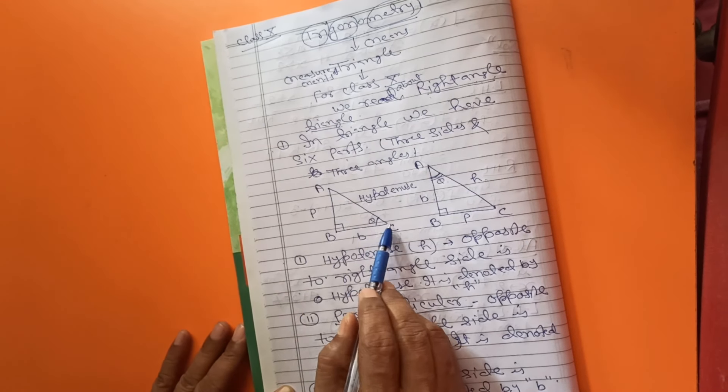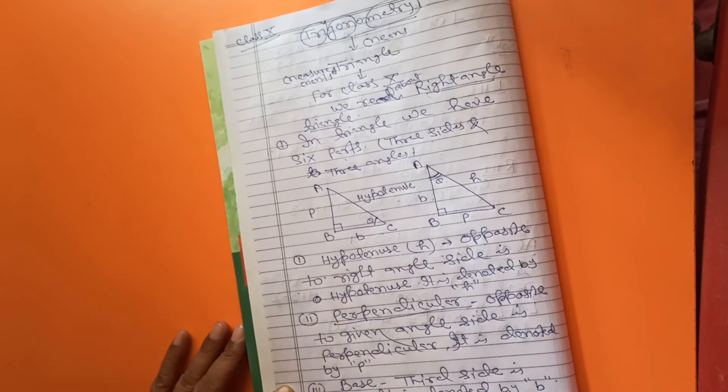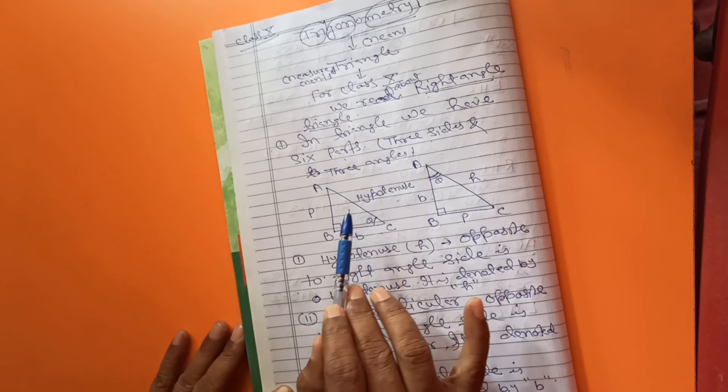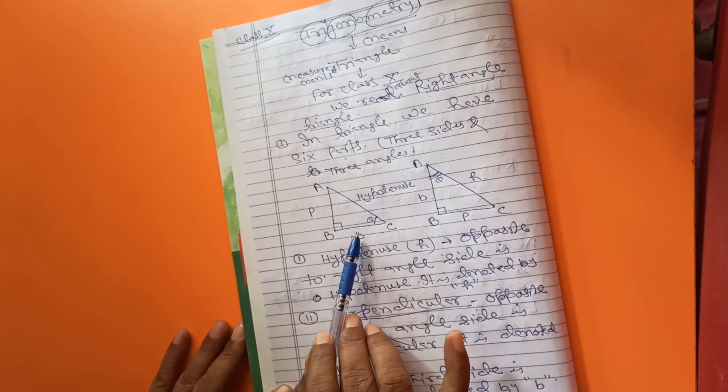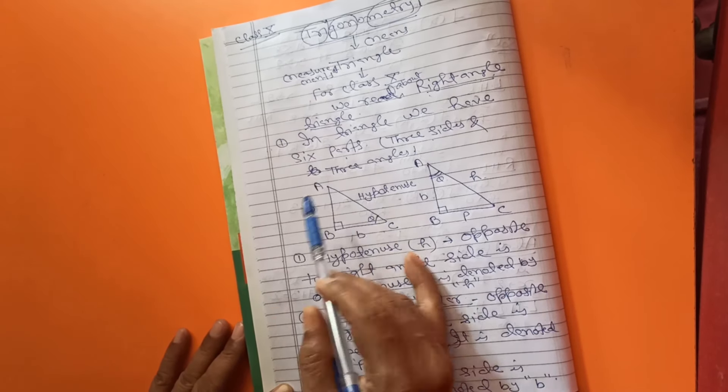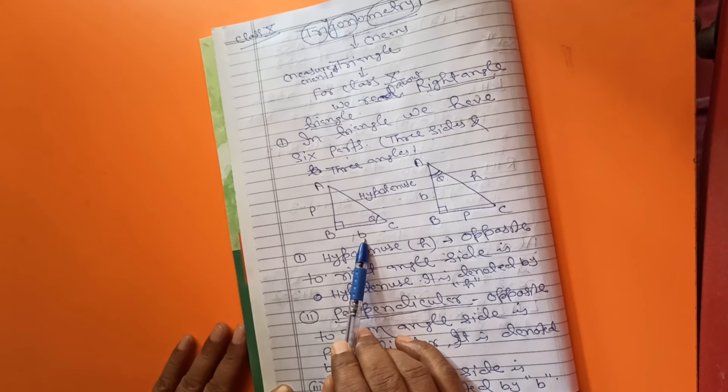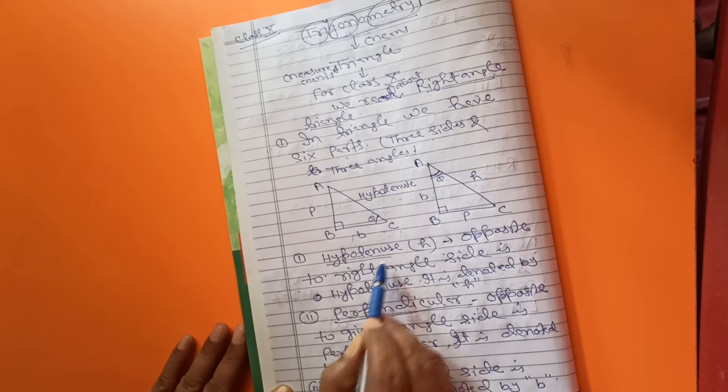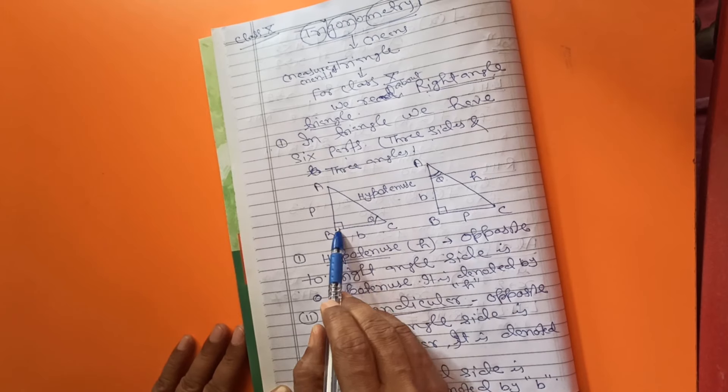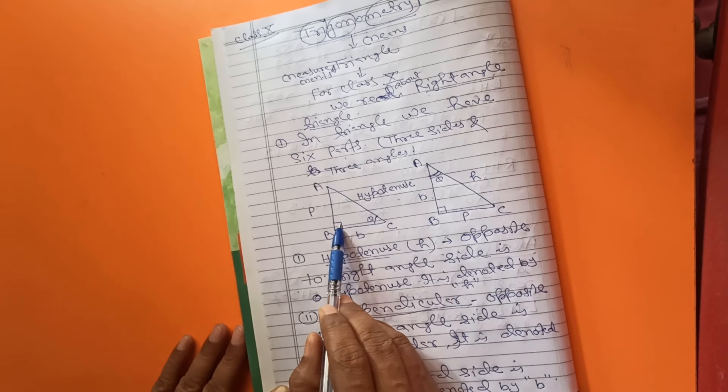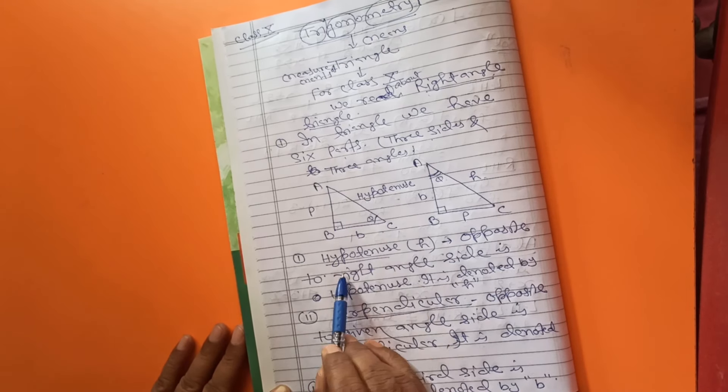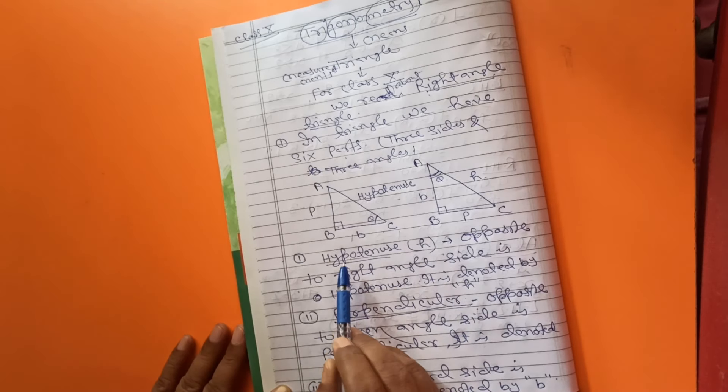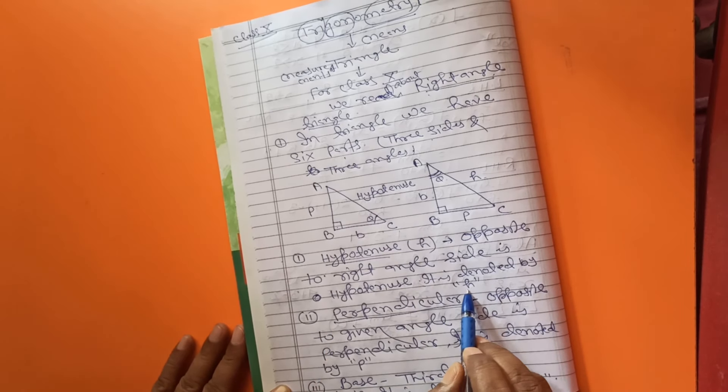So in right angle triangle, you have three sides, hypotenuse, perpendicular and base. So how can you find out which side is hypotenuse, which side is perpendicular and whose side is base. For hypotenuse, opposite to right angle side. Opposite to right angle side is always hypotenuse. It is denoted by a small h.